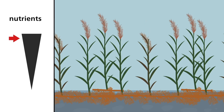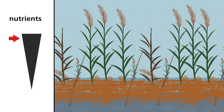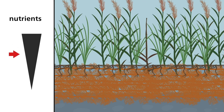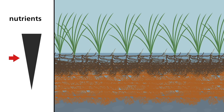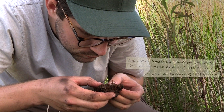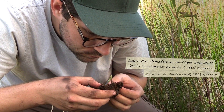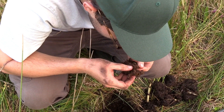Reed peat usually forms in fens with high nutrient availability. Should the nutrient availability drop over time, reed beds can gradually be replaced by sedge meadows. On top of the reed peat, sedge peat will form. In this way, peat soil profiles with layers consisting of different peat types can emerge. Being able to identify peat types is important since the peat type heavily influences the chemical and physical properties of a peat soil.